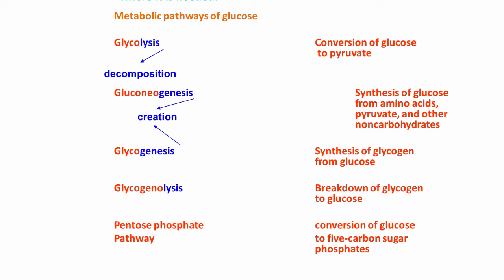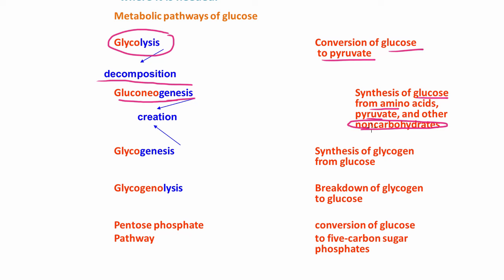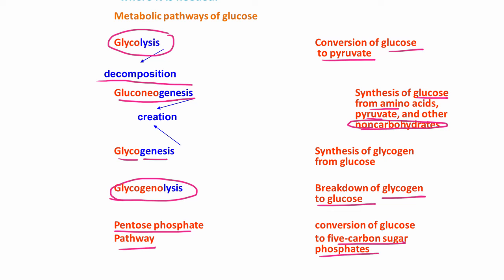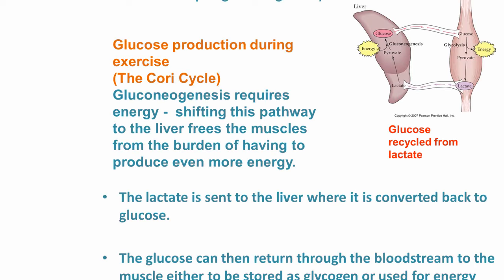The major metabolic pathways of glucose are: glycolysis—the breakdown of glucose to pyruvate; gluconeogenesis—the synthesis of glucose from amino acids, pyruvate, and other non-carbohydrates; glycogenesis—the synthesis of glycogen from glucose for storage; glycogenolysis—the breakdown of glycogen to free glucose; and the pentose phosphate pathway—the conversion of glucose to 5-carbon sugar phosphates.